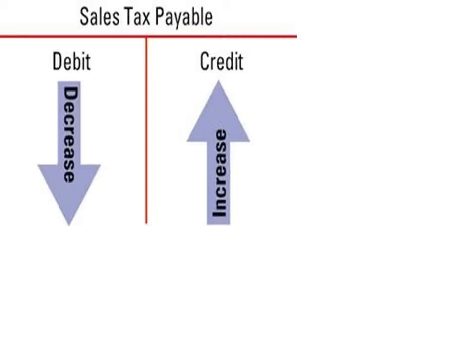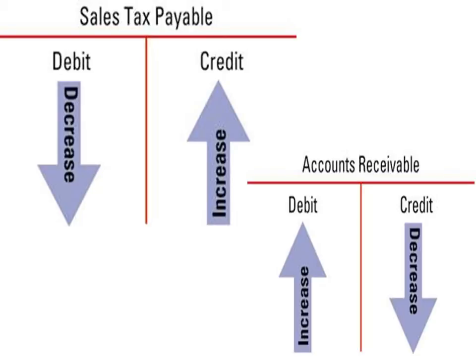Some new accounts to note: Sales Tax Payable is a liability — it sits on the right-hand side of the accounting equation and is increased with a credit. Accounts Receivable is an asset account on the left-hand side, so a debit means an increase. Sales Tax Payable is a liability because we've collected the money for the government but have not yet paid them their taxes — until we do, it's a liability to our business.